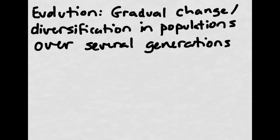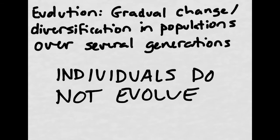Hello, everybody. Today we're going to discuss a little bit about evolution and also about Charles Darwin and some of his ideas and the proof that we have to show that evolution is, in fact, happening. Simply put, evolution is gradual change or diversification of a population over several generations. A very important thing to remember is that individuals don't evolve. Populations or groups of individuals evolve over time, but the individuals themselves don't change their genetic makeup.